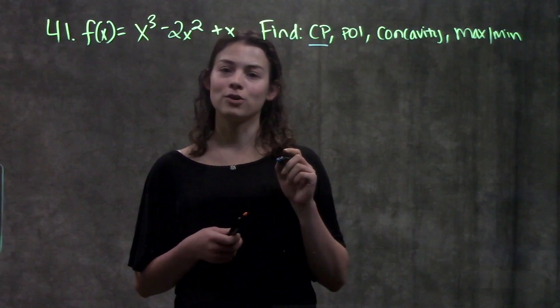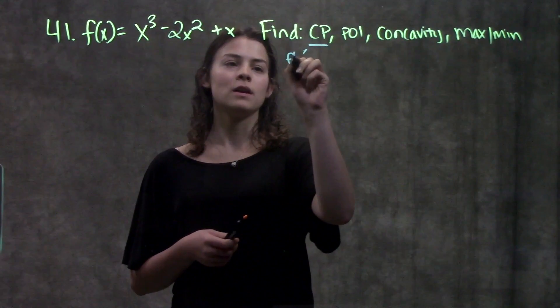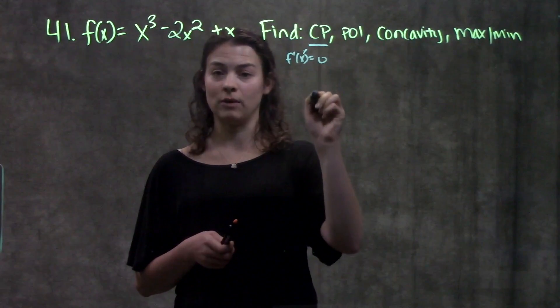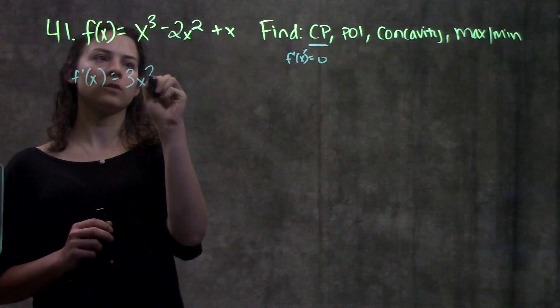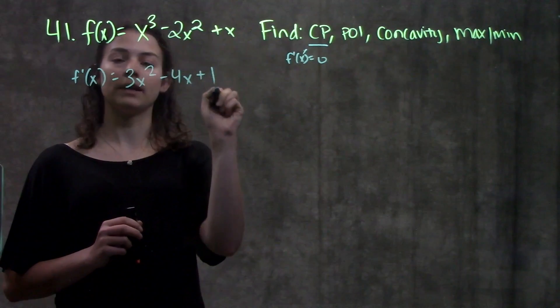The first thing we're going to find are critical points. Remember, this is wherever the first derivative is equal to zero. So let's find the first derivative. F prime of x is equal to 3x squared minus 4x plus 1.